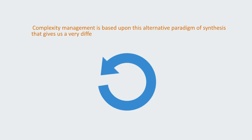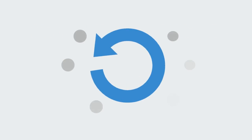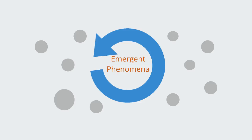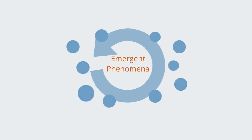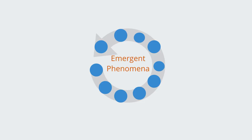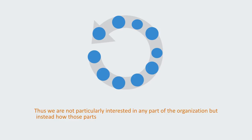Complexity management is based upon this alternative paradigm of synthesis that gives us a very different model of organizations and how to manage them. Being holistic, it is focused on the whole instead of the parts. It is primarily focused on the whole functionality of the organization, positing that this is an emergent phenomenon — that is to say, the whole organization is something more than the sum of its parts. From this perspective, it is the particular way that the parts are interrelated that gives rise to this added value, the emergent global functionality, and it is this emergent functionality that we're really interested in — not any individual part, but how those parts are arranged into a functional unit.